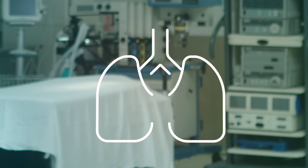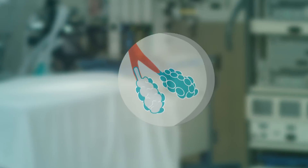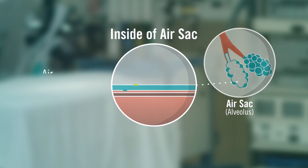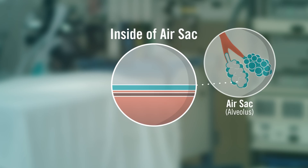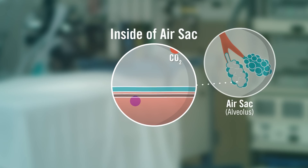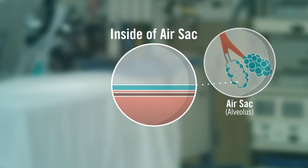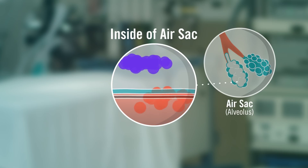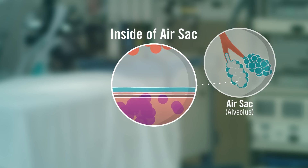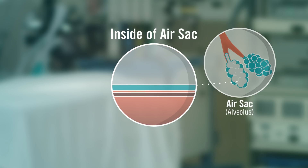Your lung is made up of millions of tiny air sacs, too small to see without a microscope. The wall of each air sac is very thin — about 10 times thinner than a strand of hair. These walls need to be thin to allow oxygen inside the air sac to move easily through the wall into the bloodstream. It's easy to take a breath, as thin walls mean the lung is flexible and easy to expand when you breathe.